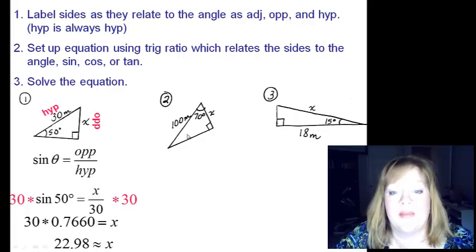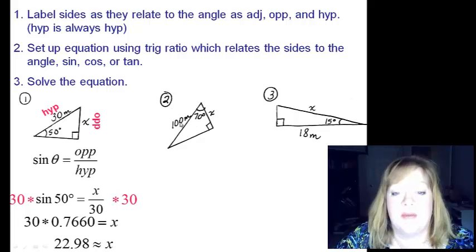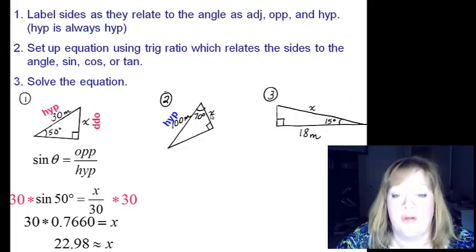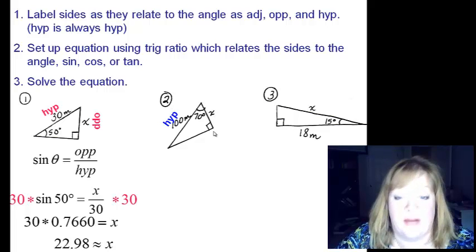Number two, first step is to label the hypotenuse. So here's my right angle, opposite the right angle is the hundred, so that's the hypotenuse. Then you have to ask x, how does it compare to the angle, seventy degrees? If you notice, x forms a side of the angle, that right away gives it away. That's got to be an adjacent side.